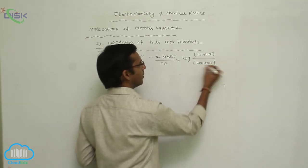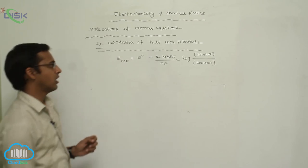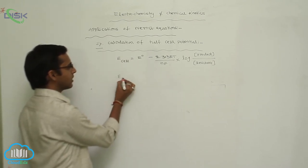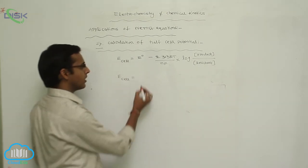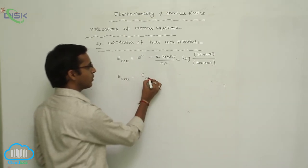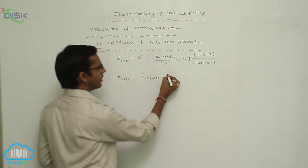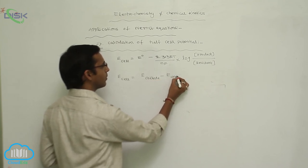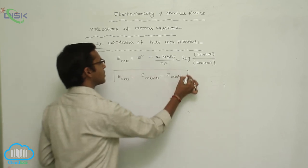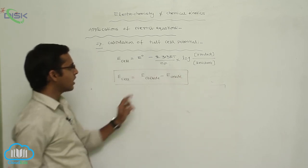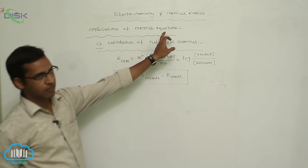This is the calculation of half cell potential. The simple equation for cell potential is: E cell equals E cathode minus E anode. This is another way to calculate the EMF of a cell or cell potential using the Nernst equation.